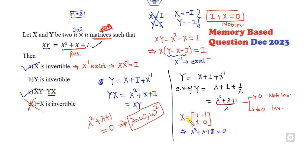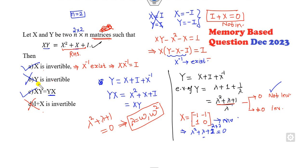So X is an invertible 2×2 matrix, and substituting here, the eigenvalue of Y becomes 0. Once it's 0 it means Y is not invertible. So the right answers are A and C for this question.